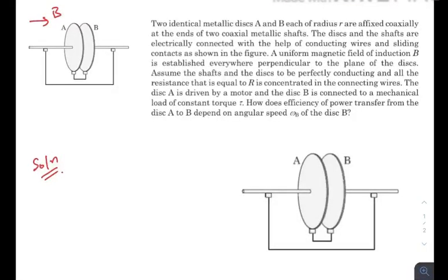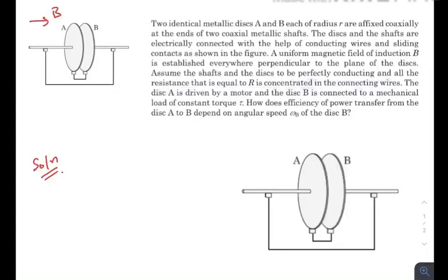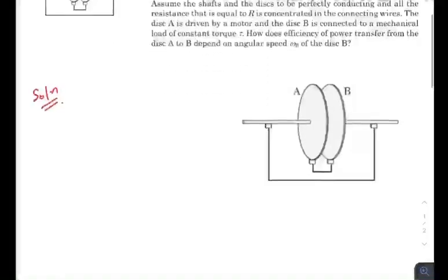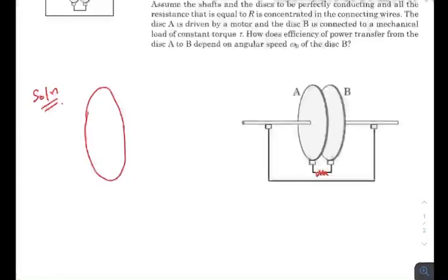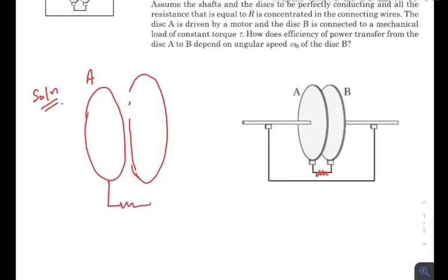Assume the shafts and the disks to be perfectly conducting, and all the resistance — equal to capital R — is concentrated in the connecting wires only. So if you draw the diagram once again, here is disk A, here is disk B, and this connecting wire will have all the resistance R.